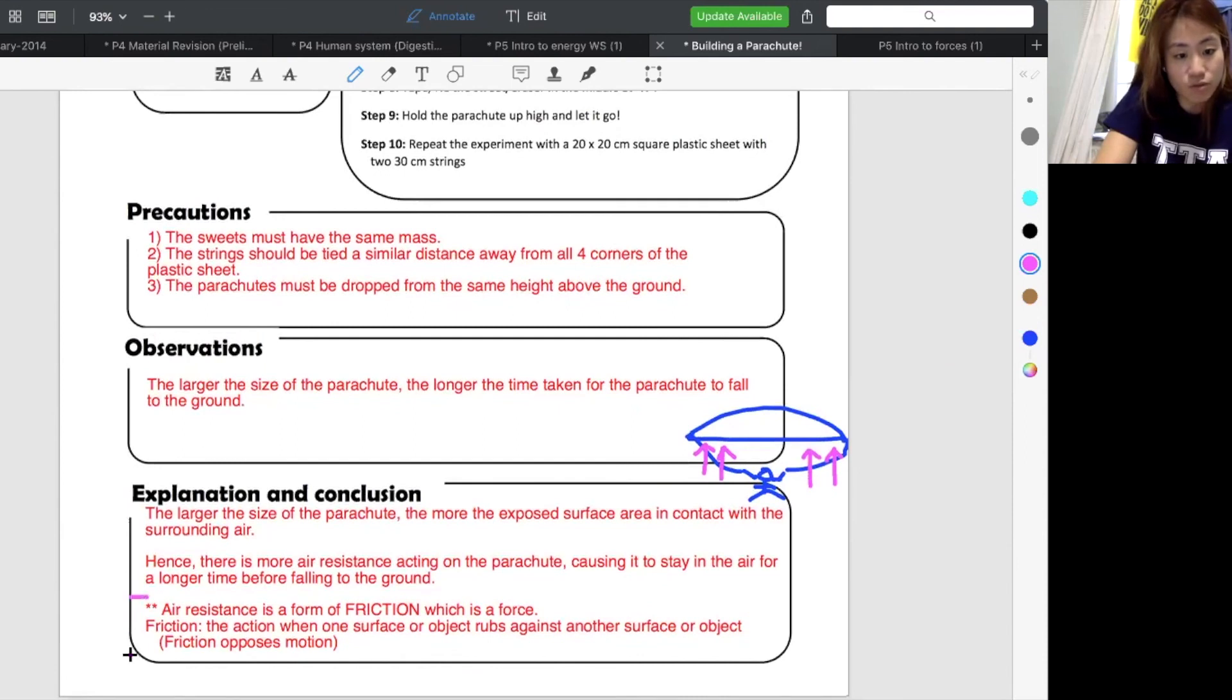Now, the next thing I added. Please, you have to write this down. I say that air resistance is a form of friction, which is actually a force. So friction is a force, which also means you can say air resistance is a force as well. And what is friction? Friction is the action when one surface or object rubs against another object or another surface. And friction opposes motion. But what is friction? Friction will always go the opposite direction. So the meaning of opposes is goes the opposite direction of.